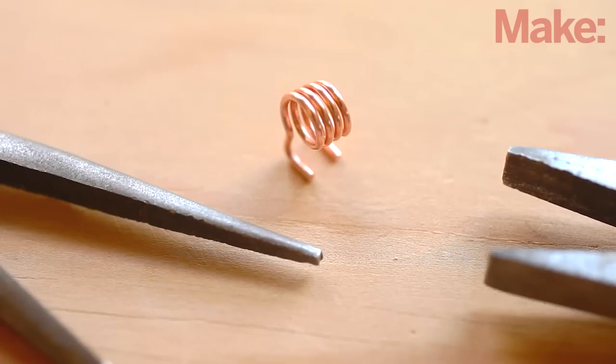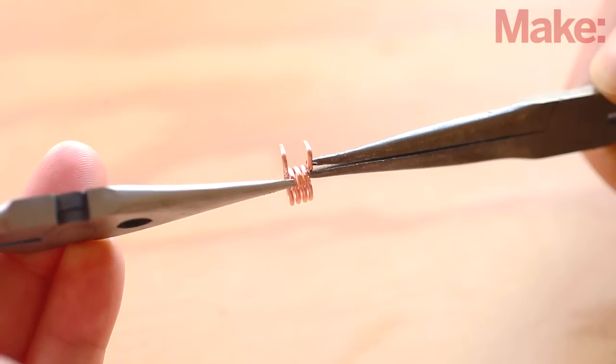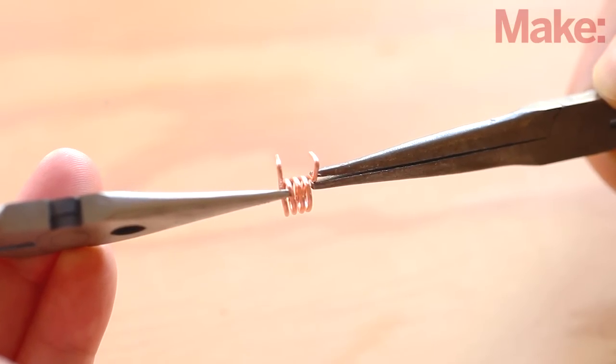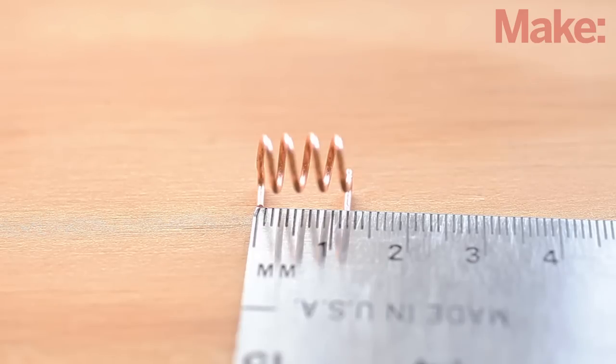Bend little feet on the ends of the leads and adjust them so the coil will stand upright. Holding a pair of pliers in each hand, grab the coil's leads and stretch it evenly along its length until the feet are 12 millimeters apart on center. You may need to even out the coil spacing just a bit with a screwdriver or other tool.